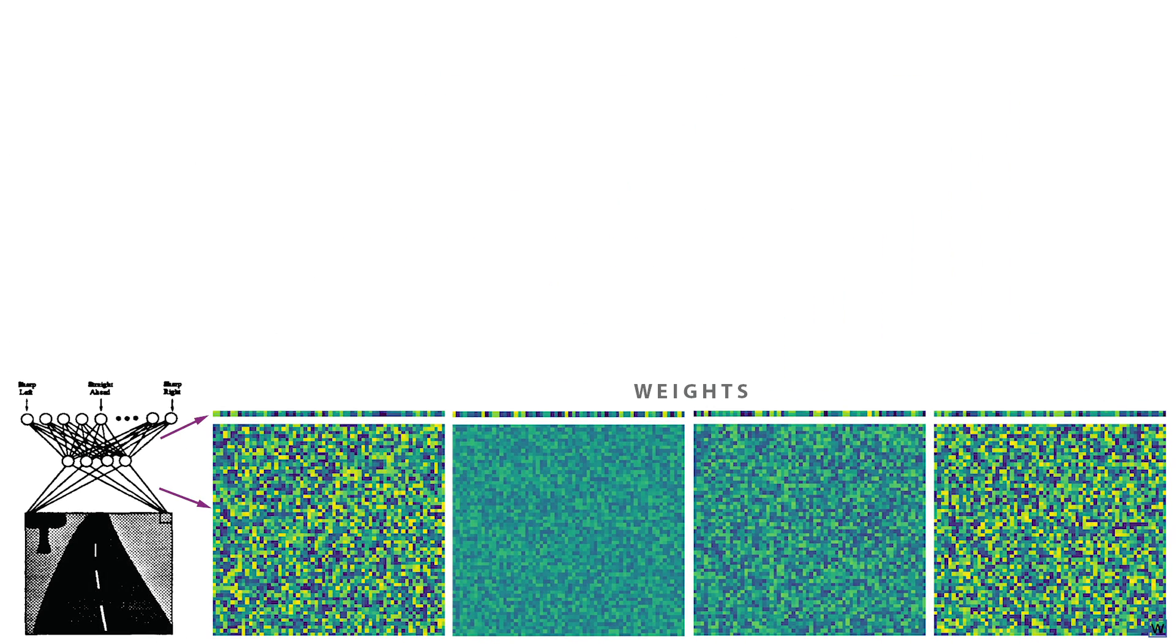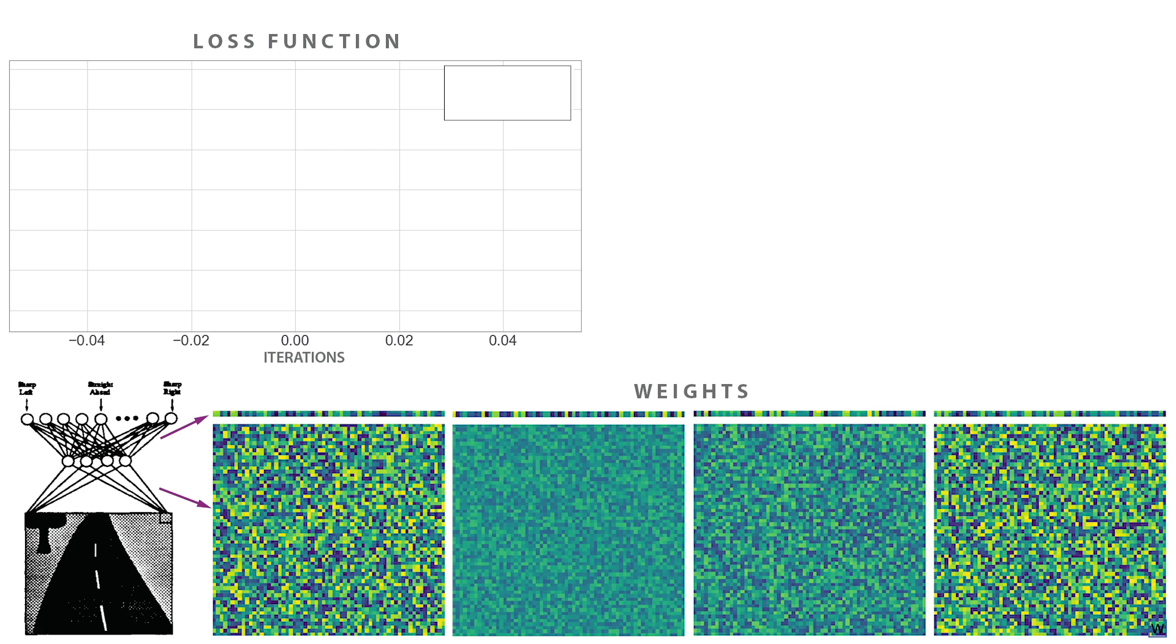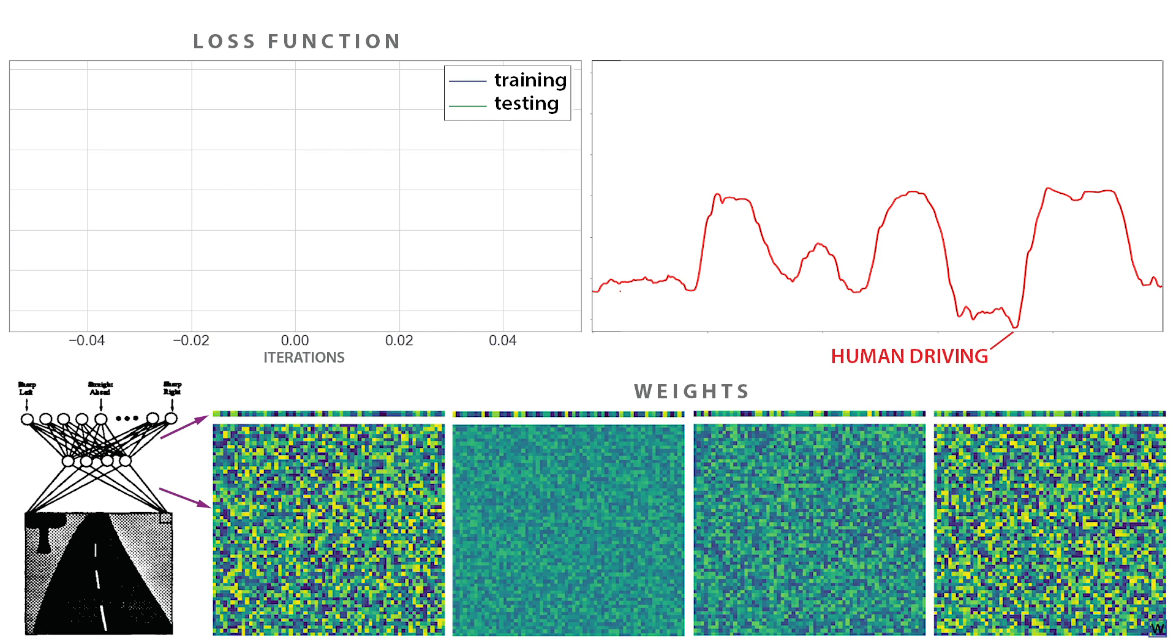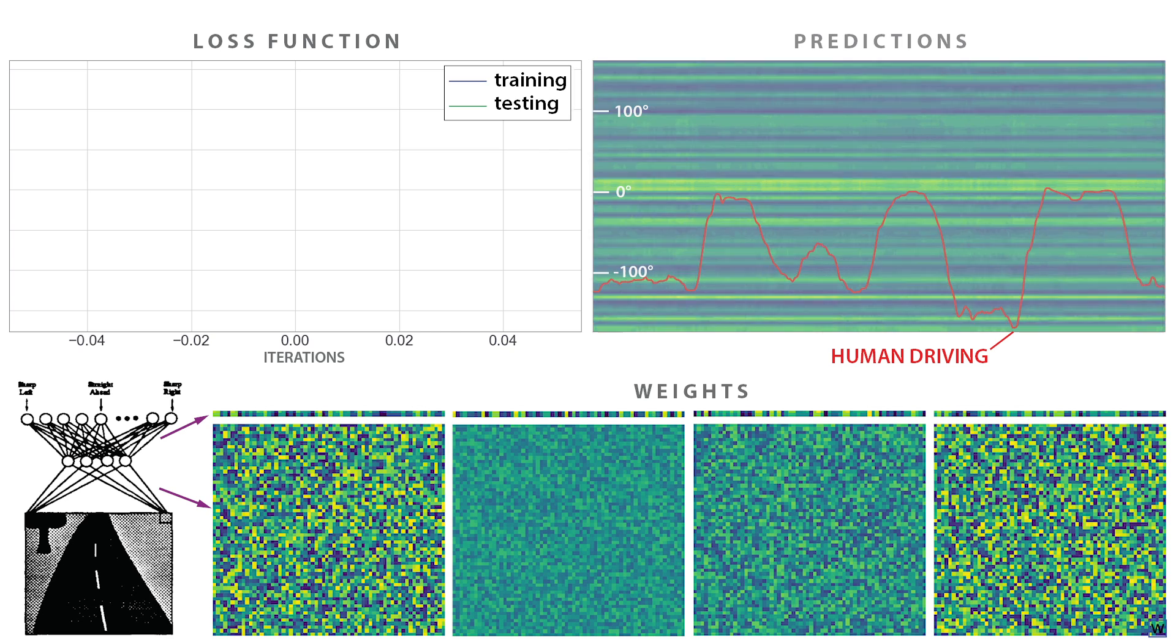Now, to train our network using Hinton's backpropagation method, we need some cost or loss function that measures how well our network is doing as we train. We'll use mean square error to measure the difference between our network's outputs and our human steering angles, and plot the value of our cost function on our training and testing data as we train. Finally, to see how our network is doing as we train, we'll visualize its predictions on our testing lap. We'll plot the steering angles our human used to get around the track in red, and visualize our network's outputs using a heat map. Alright, let's see if Alvin can learn to steer.